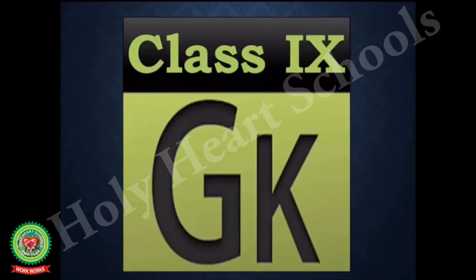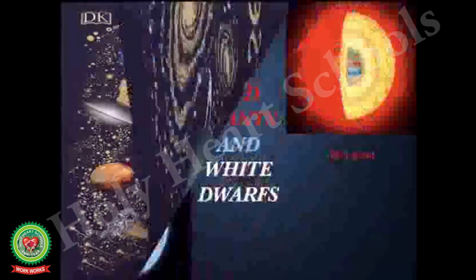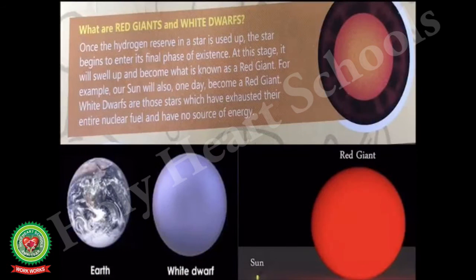Hello everyone, this is our GK video for class 9 and the topic we are going to discuss today is the mysteries of the universe. We are going to discuss some interesting phenomena which take place in our universe. The first thing we are going to discuss is red giants and white dwarfs. A red giant is formed when a star runs out of hydrogen fuel. Once all the hydrogen turns into helium, there is no longer energy which keeps the star from collapsing.